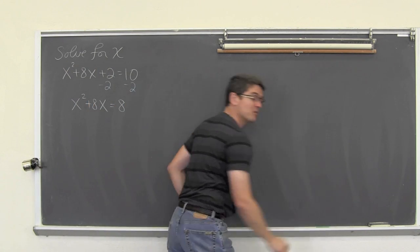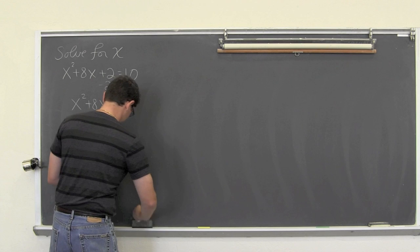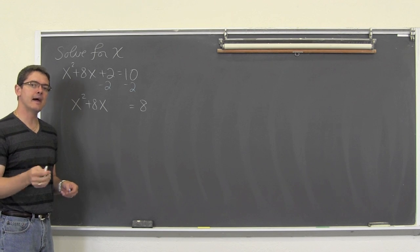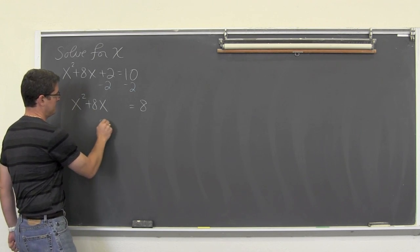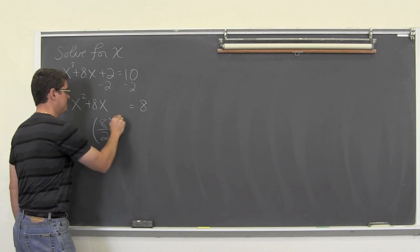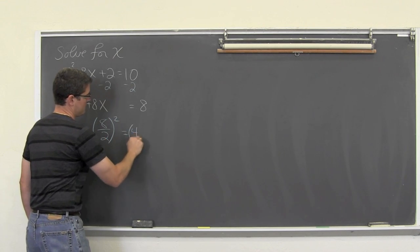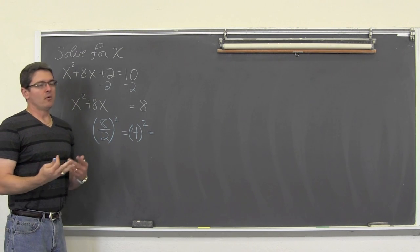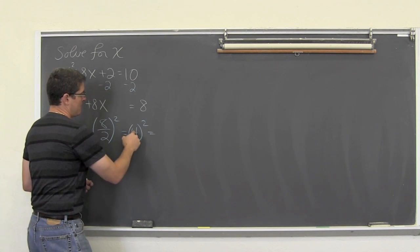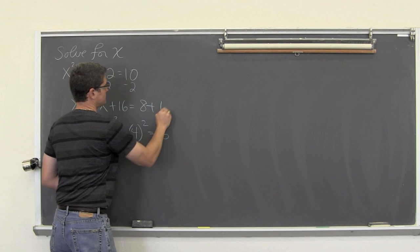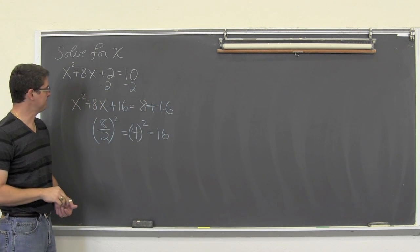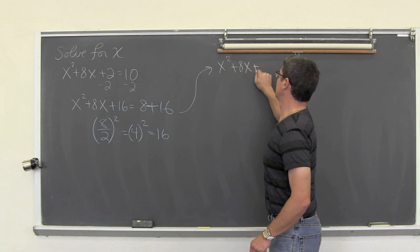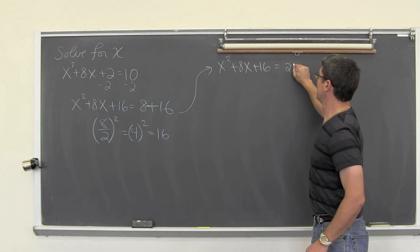Remember to leave space to complete the square. Take half of b: 8 divided by 2 is 4, positive 4 squared is 16. We add 16 to both sides of the equation, giving us x² + 8x + 16 = 24.